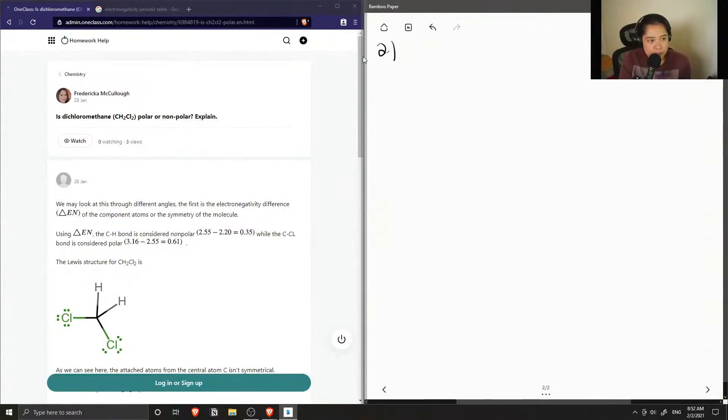Okay, so first let's draw out the Lewis structure for this molecule. And to do so, we just need to calculate the total number of valence electrons.